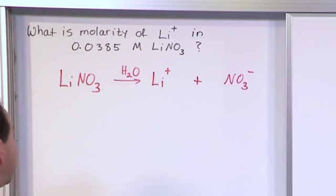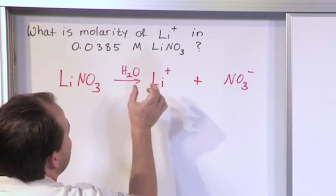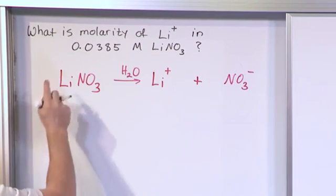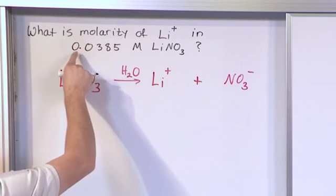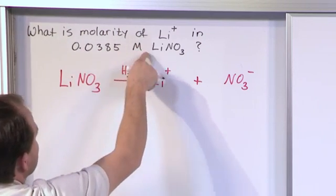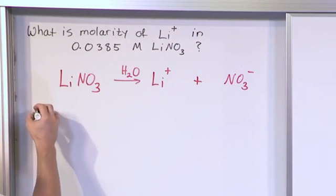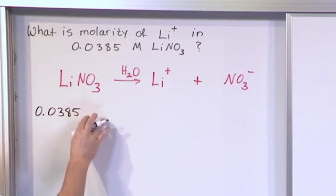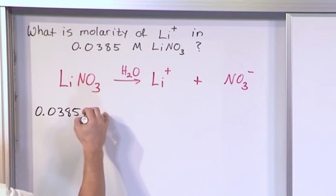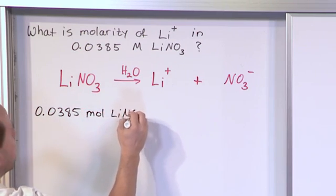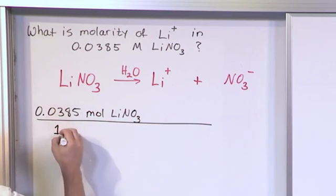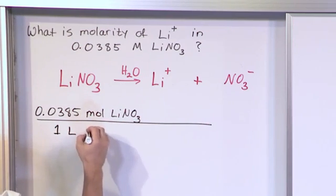So in order to calculate, what we want to know is what is the concentration of lithium ions in the solution? So you can set up a calculation just like anything else. We start with what we know, 0.0385 molar of this stuff. So the way we write it is 0.0385 molar means moles of lithium nitrate per one liter of...